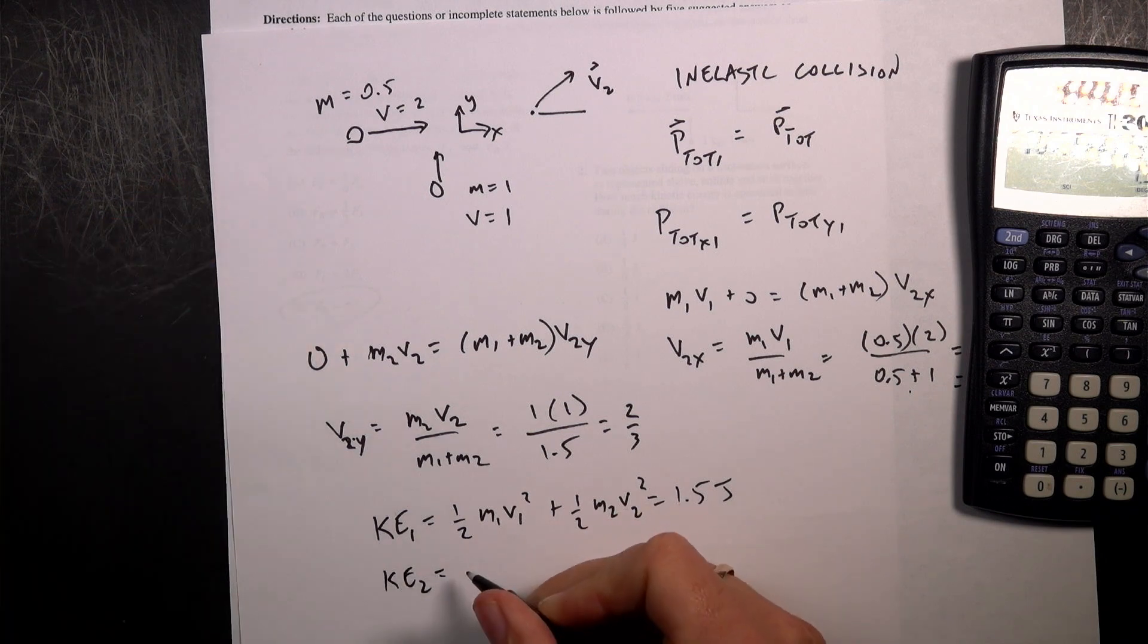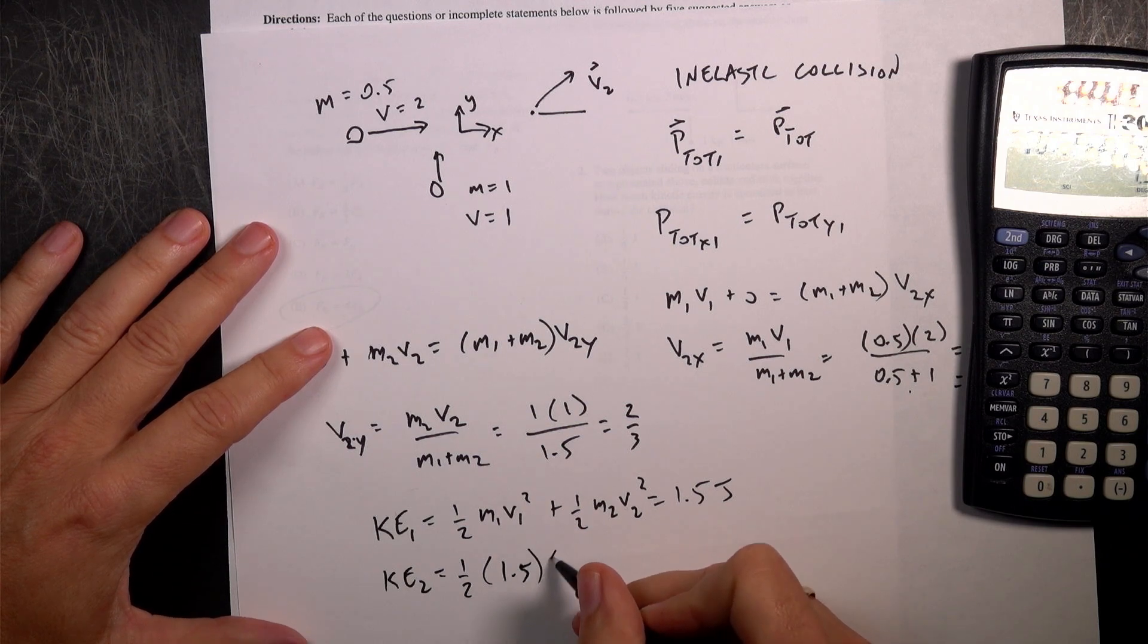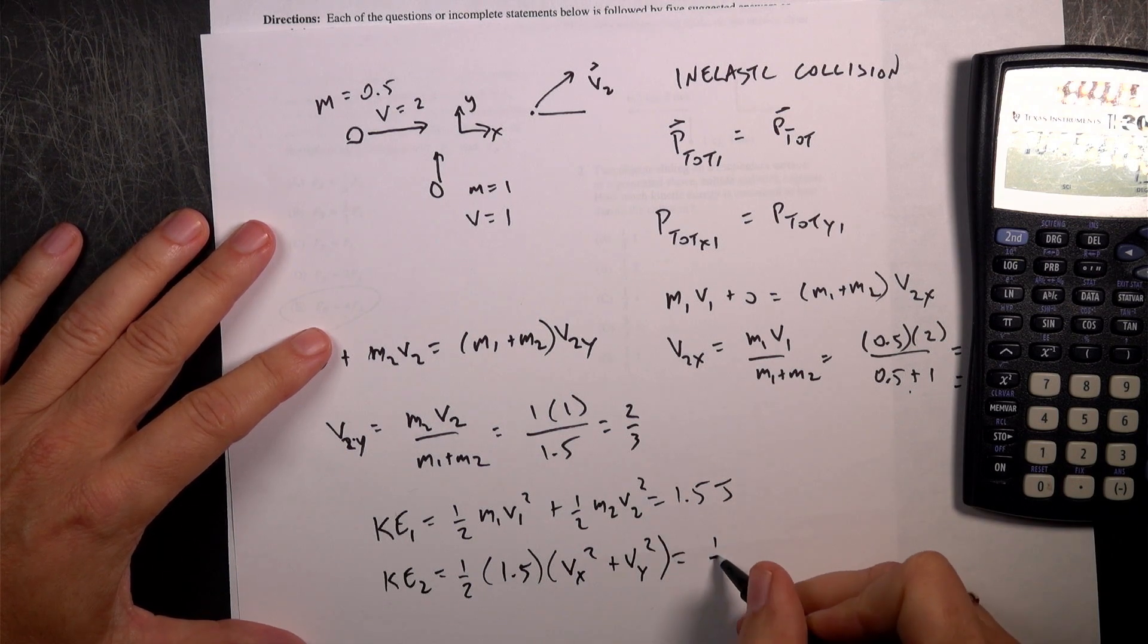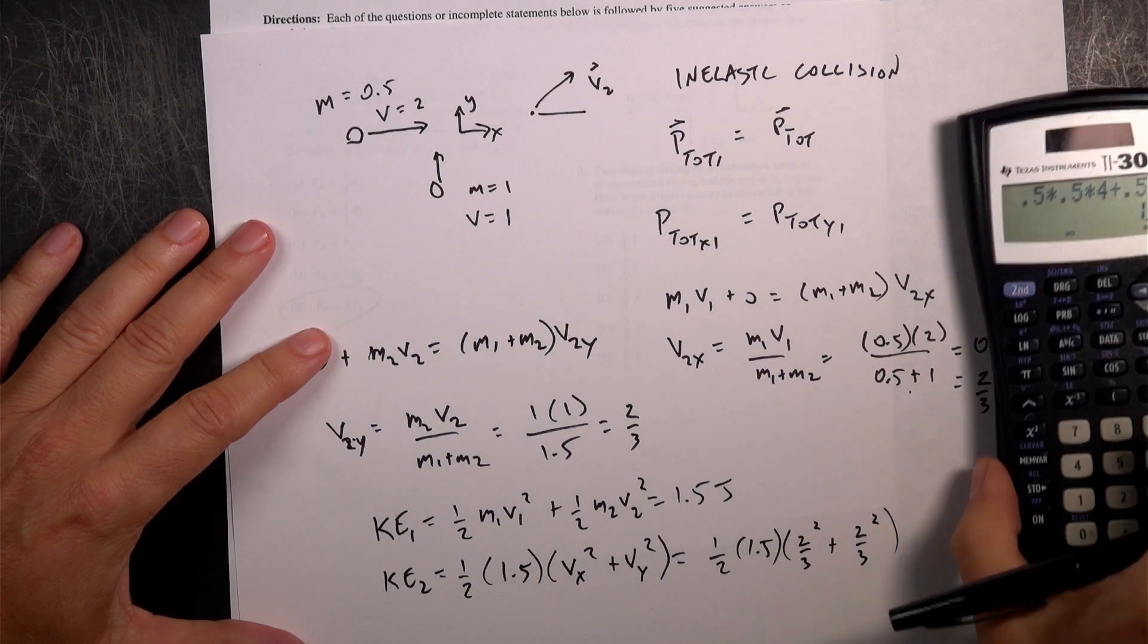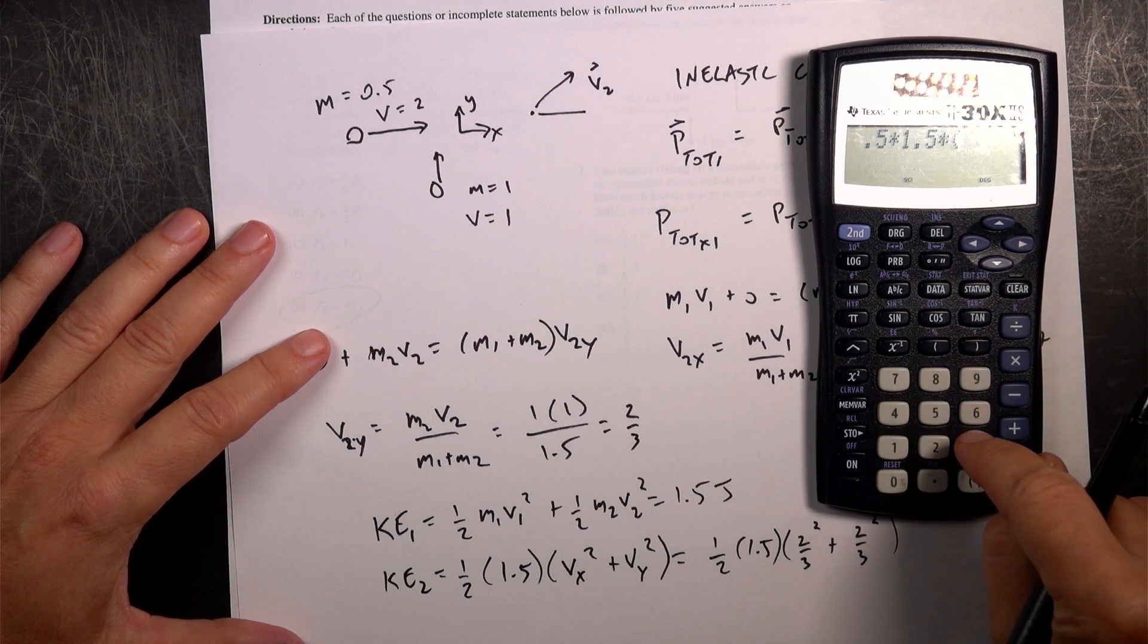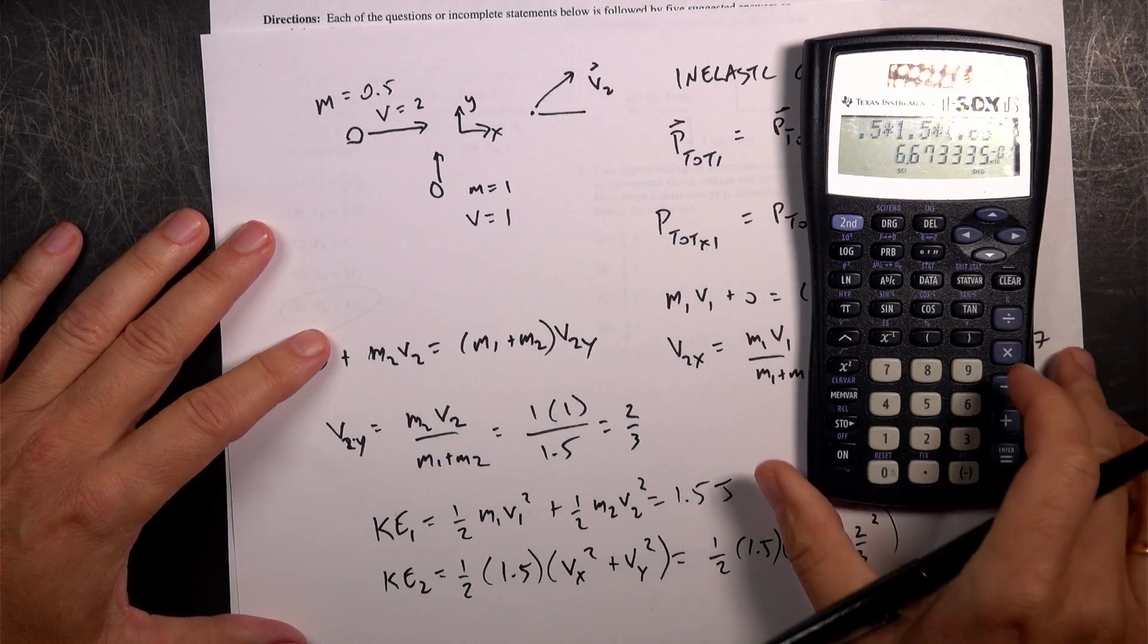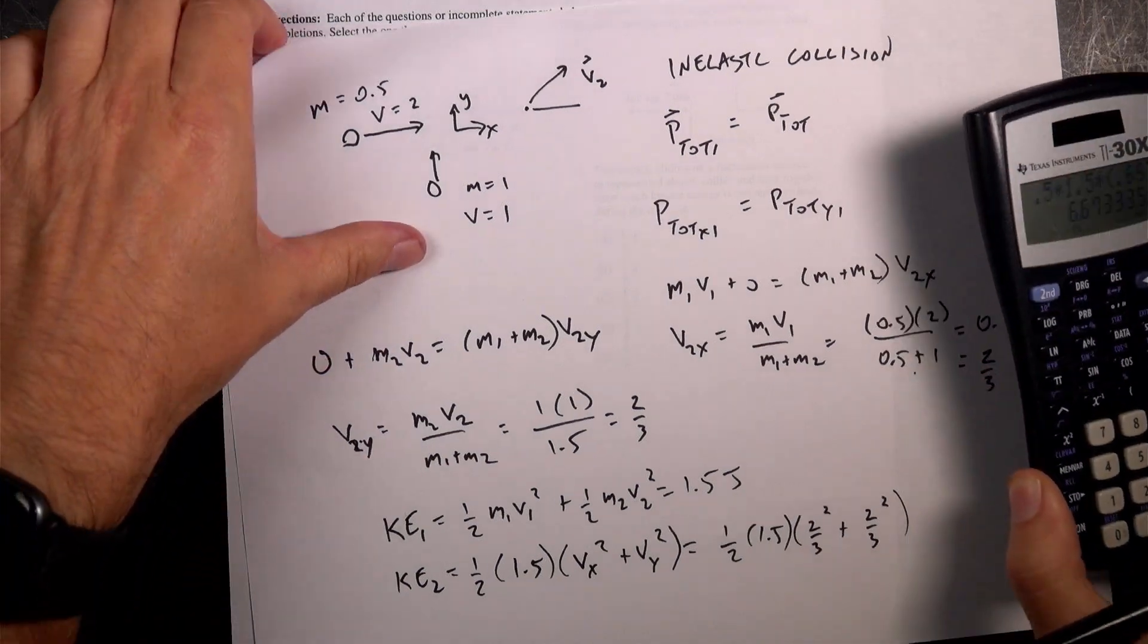Afterwards, KE2 is going to be, I can treat it as one object. 1 half, mass 1 plus mass 2 is 1.5 times Vx squared plus Vy squared. So it's going to be 1 half times 1.5 times 2 thirds squared plus 2 thirds squared. I'll just use the 0.667. Okay, so let's do that, 0.5 times 1.5 times parentheses 0.667 squared plus 0.667 squared equals. And I get 0.667.